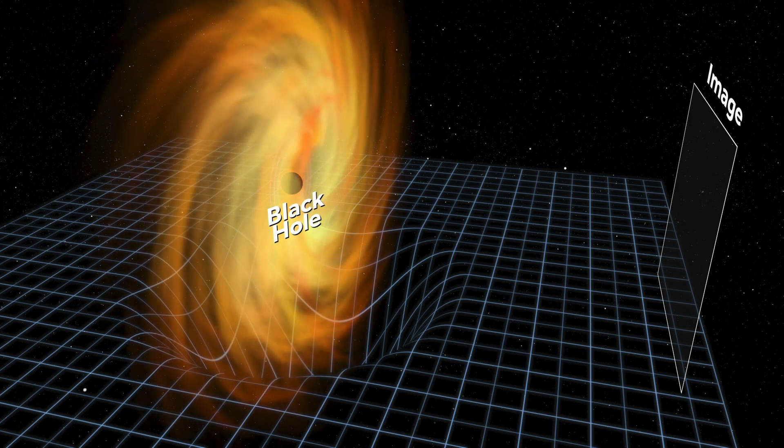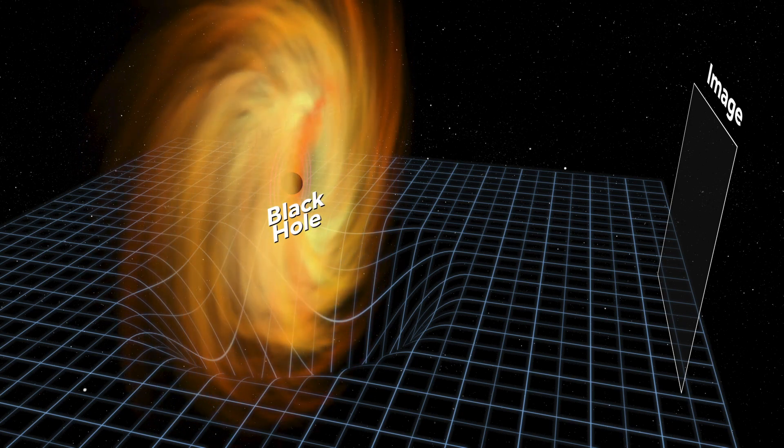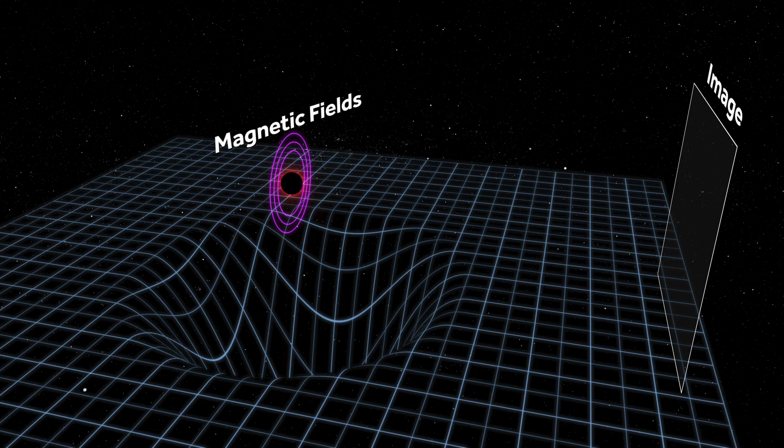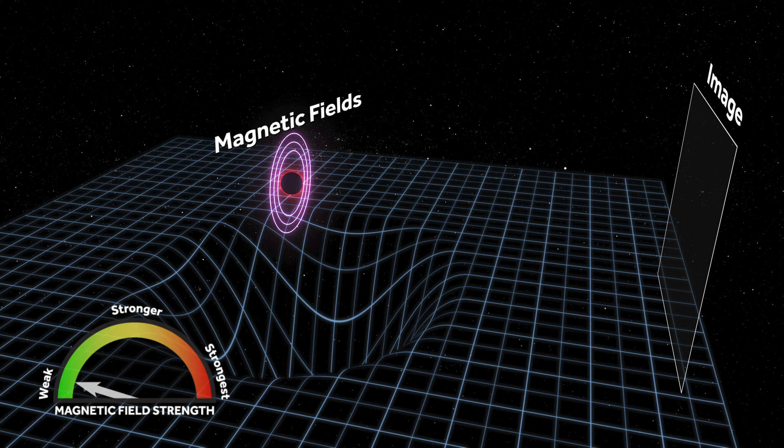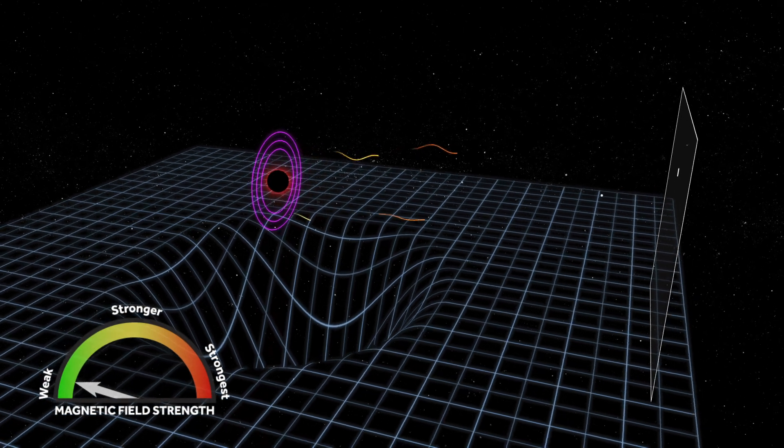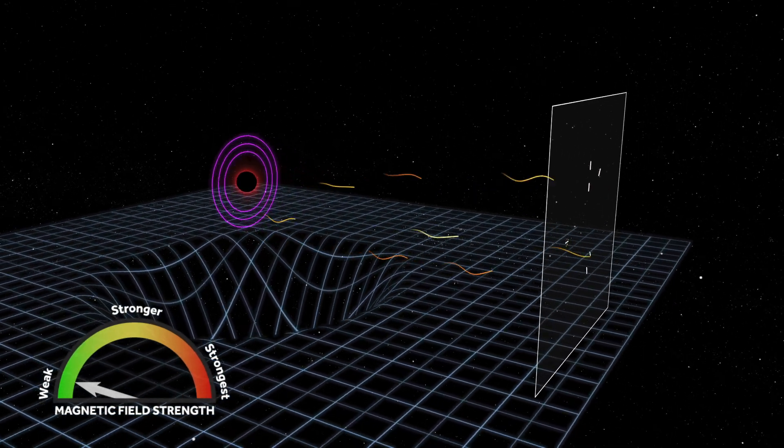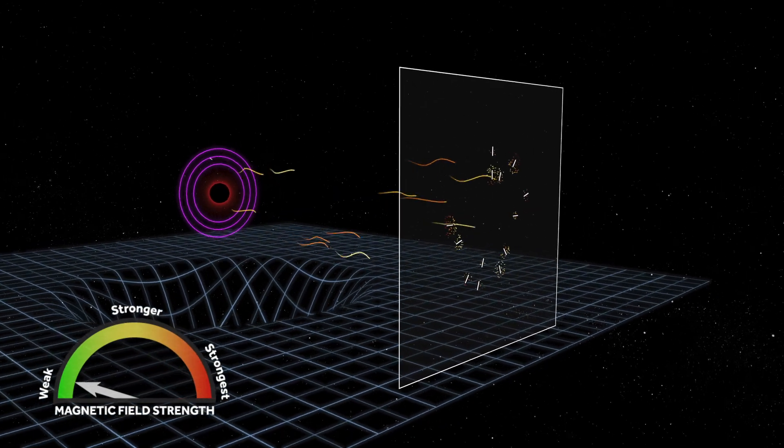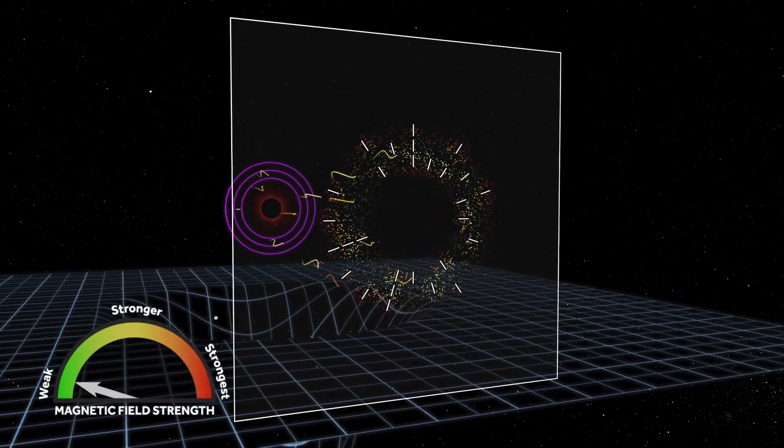The plasma swirling around a black hole has magnetic fields threaded throughout. If the magnetic fields are weak, the plasma drags them into a circular pattern. The plasma produces light waves that oscillate perpendicular to the magnetic fields, resulting in this polarization pattern shown here using white tick marks.